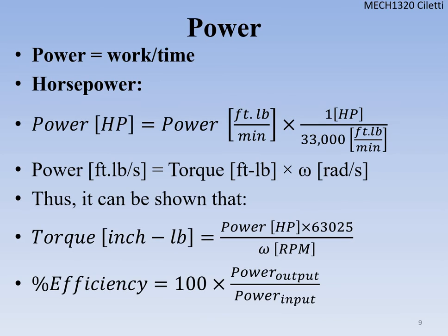Percent efficiency: get used to this one — it applies in electrical, mechanical, and pretty much any system. It's always output over input times 100%, because efficiency is always expressed as a percentage. The output over input calculation gives a decimal; multiply by 100 to get the percentage. This is the same concept as in electrical: power out over power in.